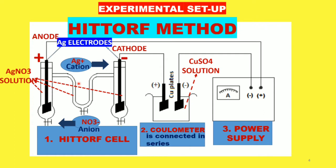The electrolytic cell is filled with silver nitrate solution. During electrolysis, the silver ions (cations) migrate towards the cathode, and the nitrate ions migrate towards the anode. As a result, there is a fall in the concentration of Ag⁺ cations around the anode.